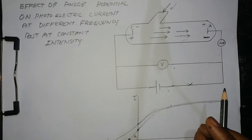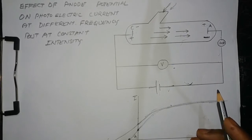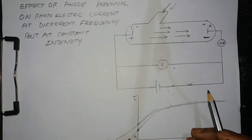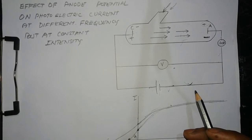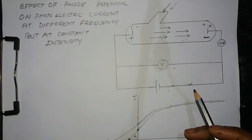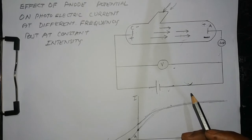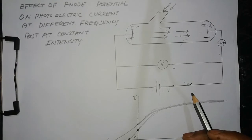What does this mean? It means the kinetic energy of the electrons is increasing. When we increase the frequency of the incident light, we are increasing the kinetic energy of the photoelectrons.